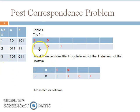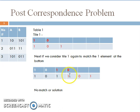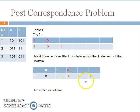When we place tile 1 we get the sequence 1, 0 on top and 1, 0, 1 at the bottom, and we find that the trailing 1 at the bottom has no match. If we place tile 1 again, the top sequence becomes 1, 0, 1, 0 and the bottom sequence becomes 1, 0, 1, 1, 0, 1. This has led to a sequence where two elements at the bottom are unmatched, so considering tile 1 again at position 2 is not good.